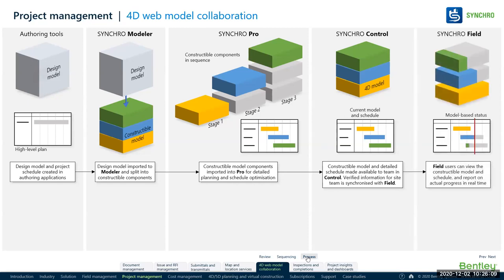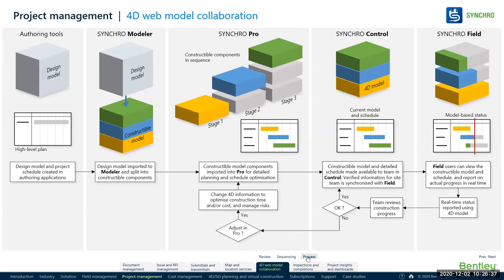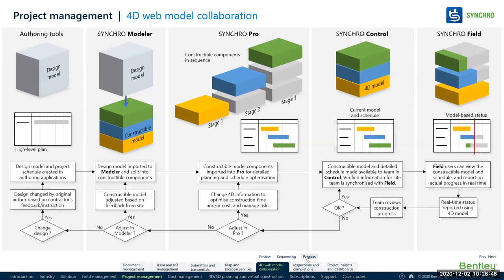We can push some of that data out to Synchro Field, the mobile app on mobile devices, where people can report on progress, view 3D models, and raise issues and RFIs. In this case, they're reporting on progress, and you can see the green activity is behind schedule. Those field users can report back in real time to the project manager in Synchro Control, who can then decide to take action — changing the construction sequence, splitting the model differently, or even changing the design content — with a managed workflow to track and manage that process through to resolution.